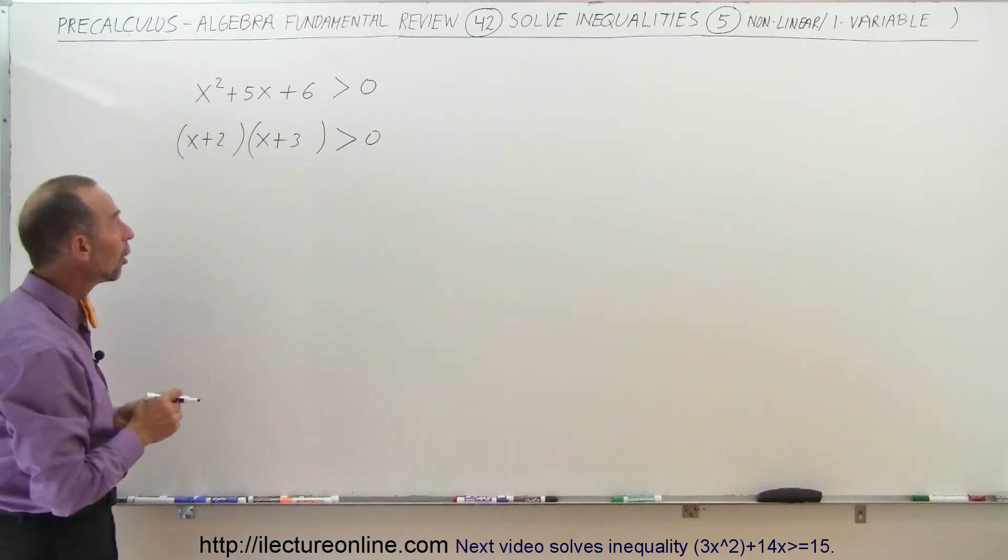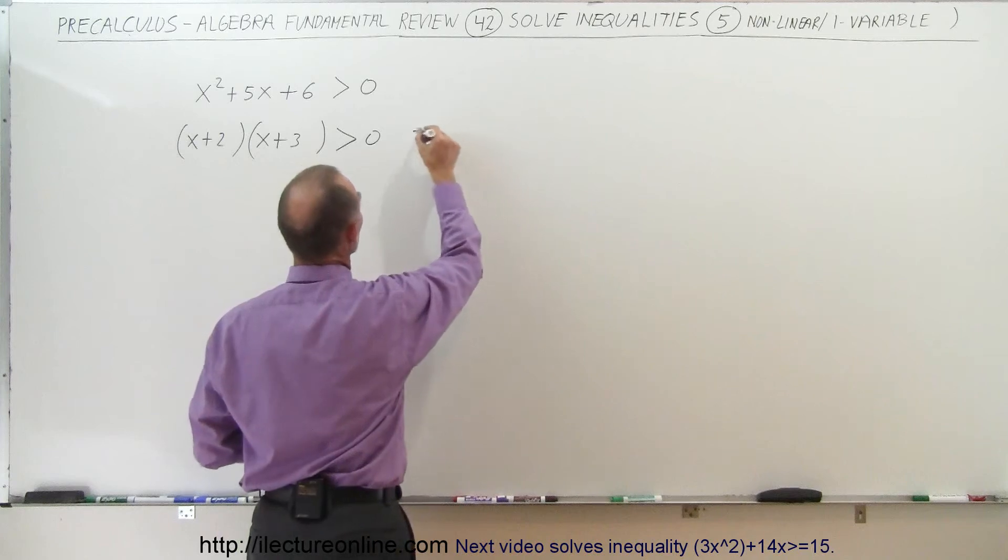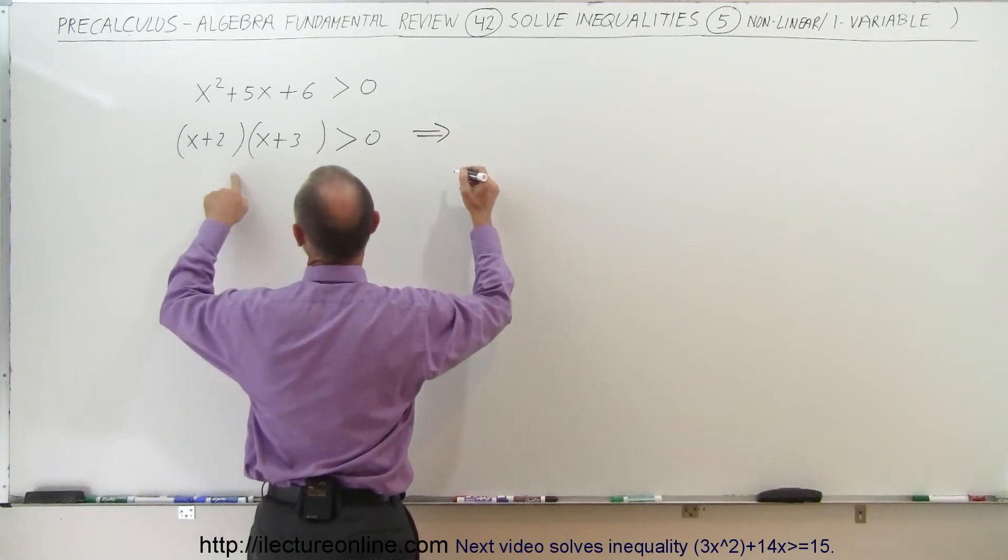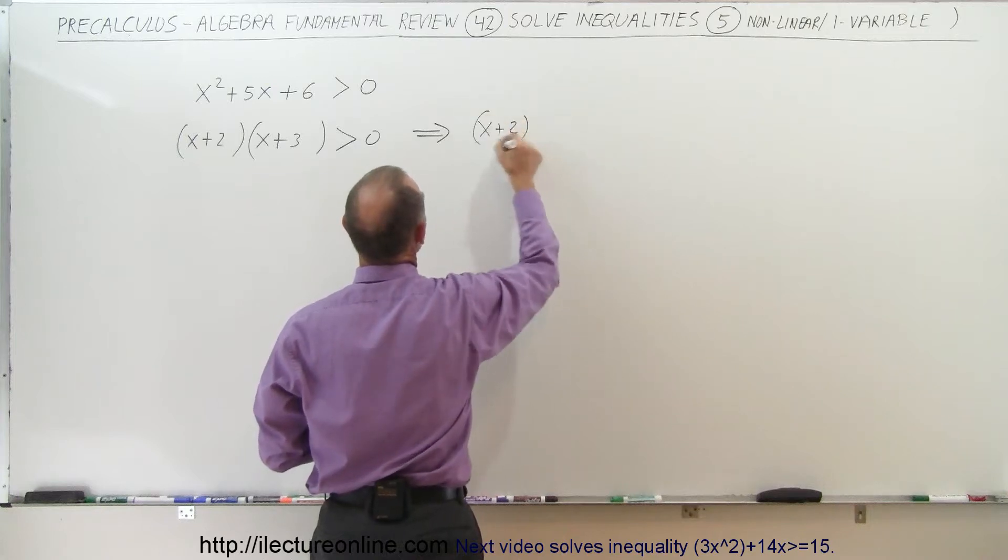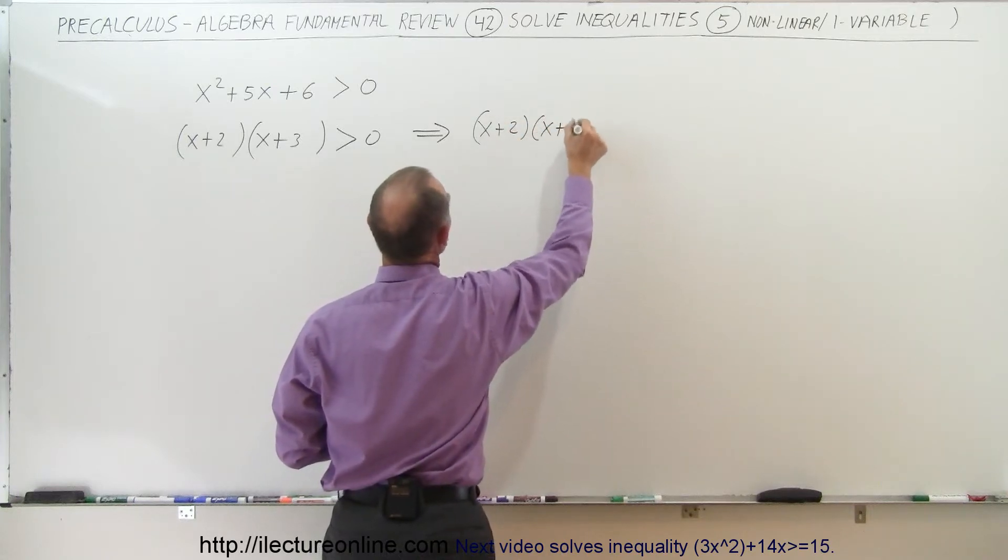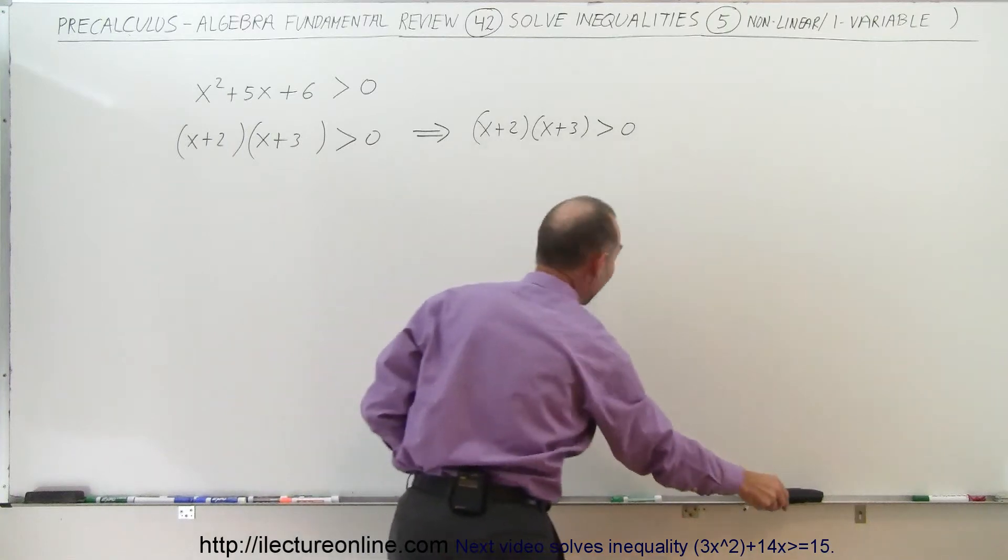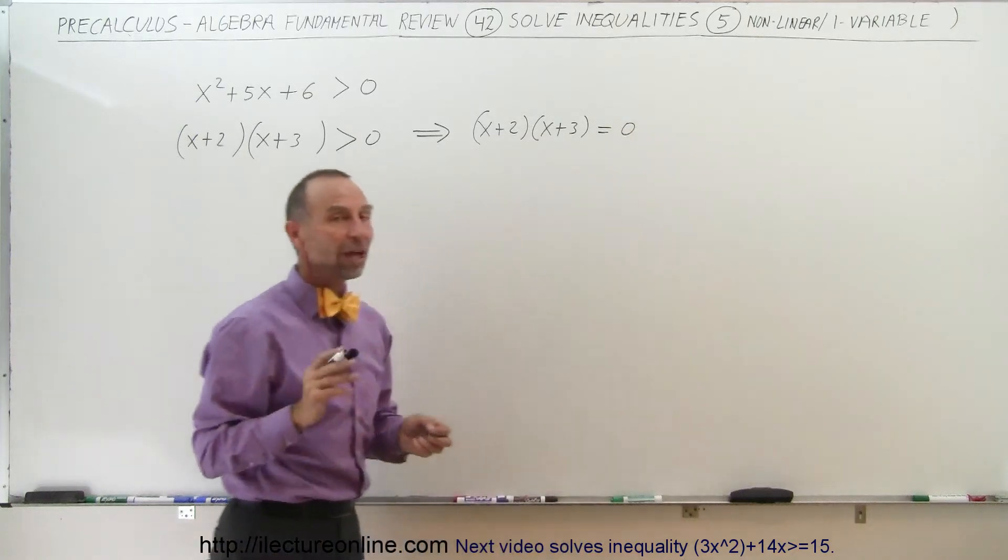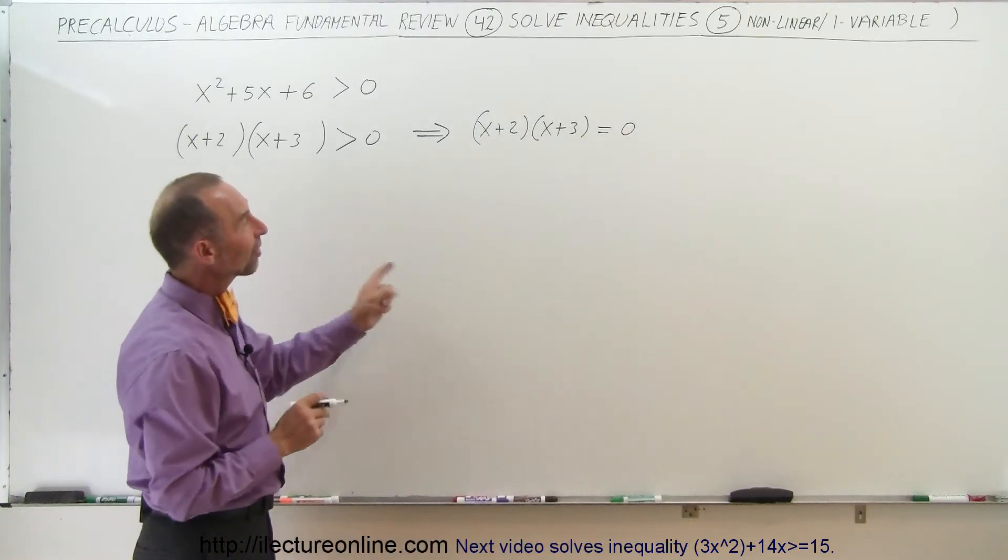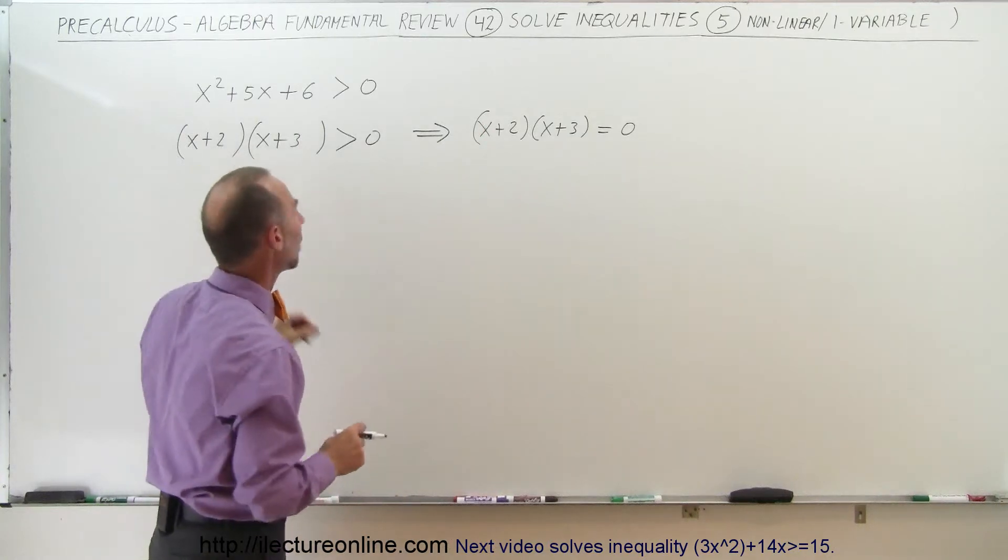Before we do that we need what we call the critical points. In other words we're going to now write the equivalent equation set of inequality. So x plus 2 times x plus 3 is greater than zero, oh not greater than, I wanted to write it as an equation not as an inequality like that.